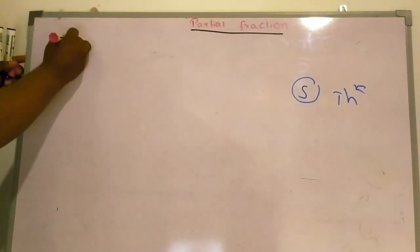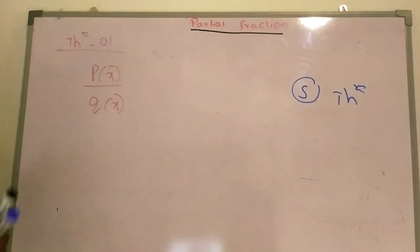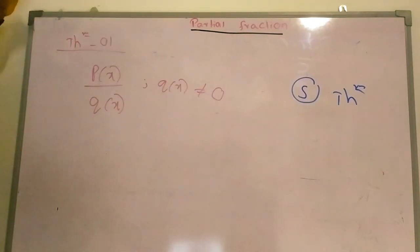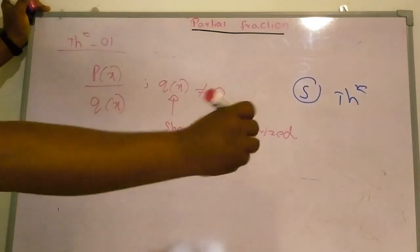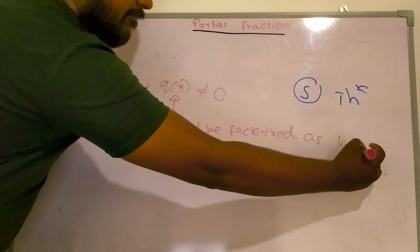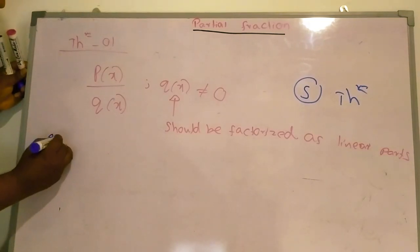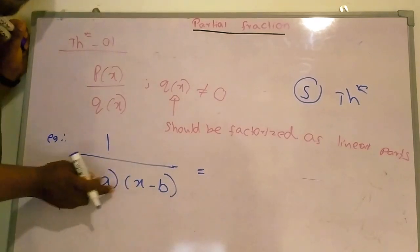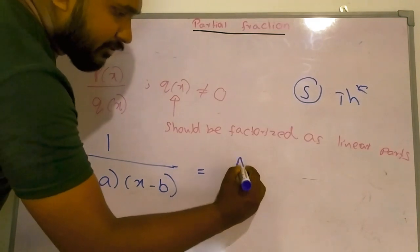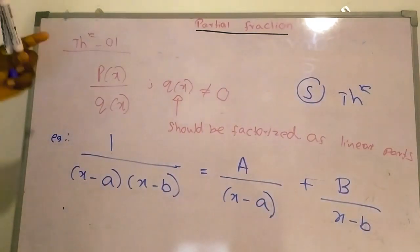Theorem number 1: we will have a fraction of the form p(x) over q(x), where q(x) cannot be zero, and the denominator should be factorized as linear factors. This is the best example for this kind — look here: (x minus a)(x minus b). You can see the denominator has linear factors. This is the behavior of the theorem.